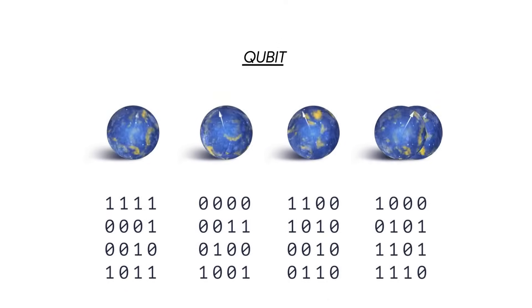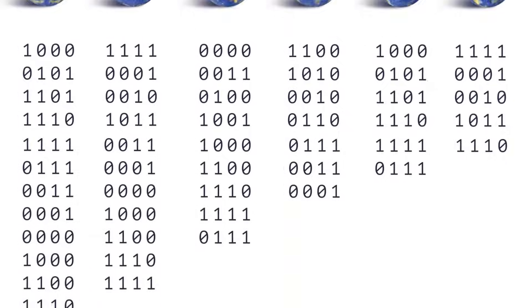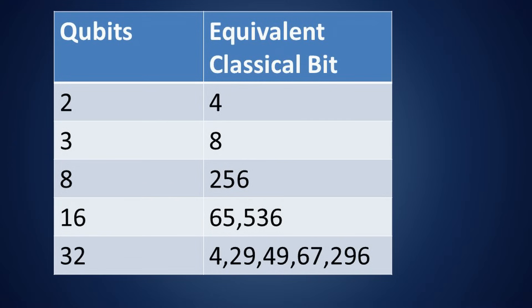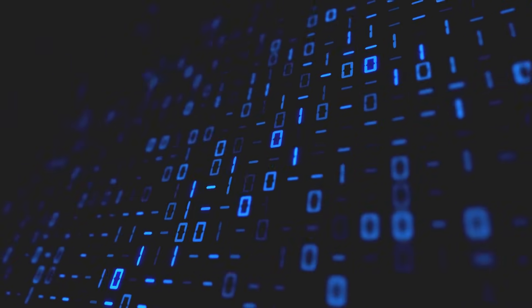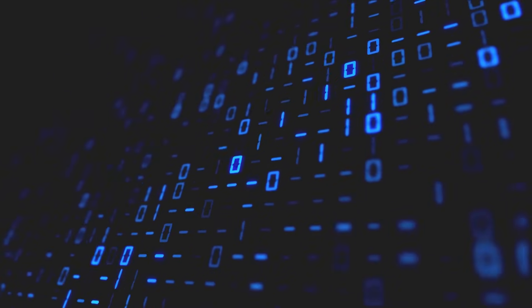As the number of qubits increases, this advantage grows exponentially. For example, eight qubits can process 256 states at once. Sixteen qubits can handle 65,536 states. This allows quantum computers to perform vast numbers of calculations simultaneously. This is what makes quantum computers special.